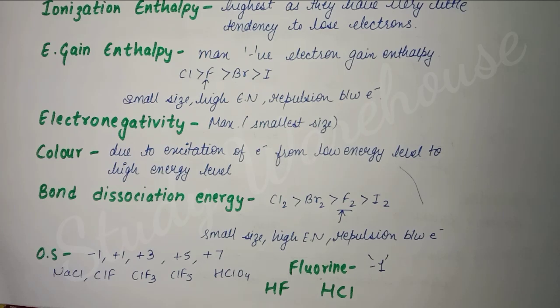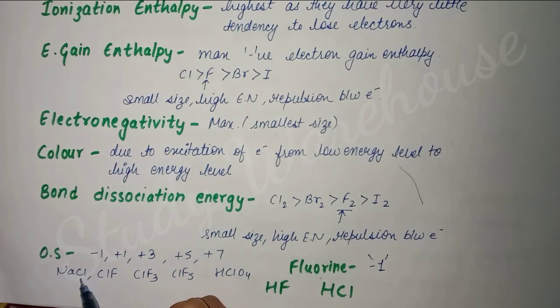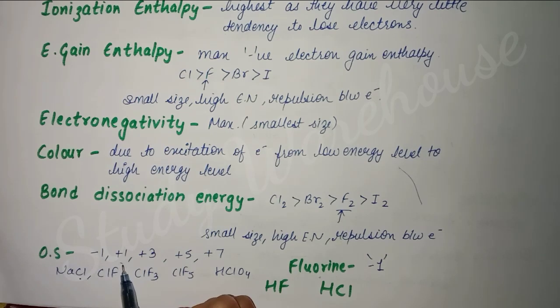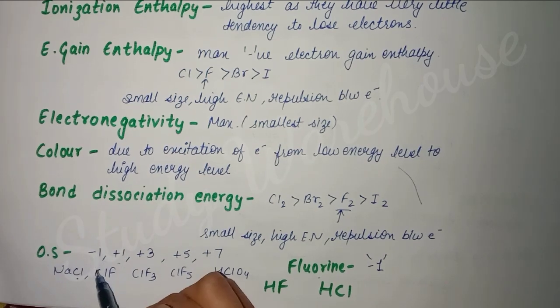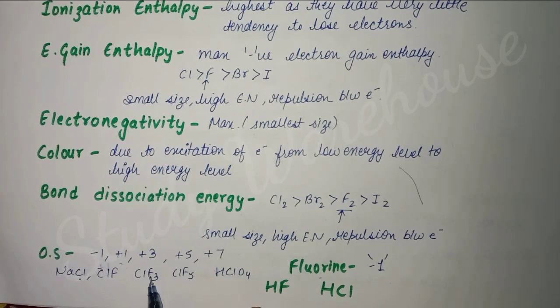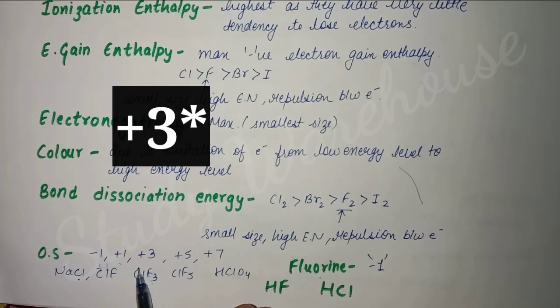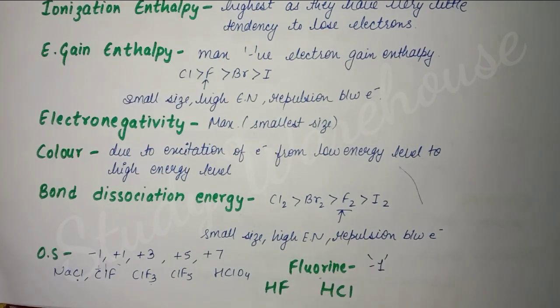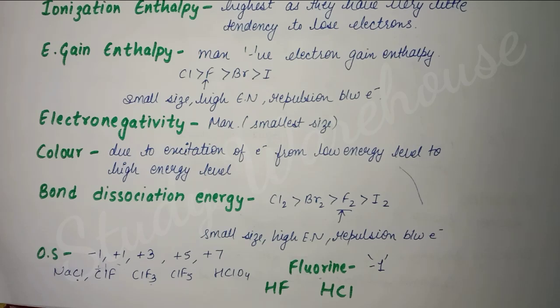For oxidation states like -1, in NaCl, chlorine's oxidation state is -1. But when chlorine is bonded with fluorine, fluorine will always be -1 and never change, so chlorine becomes +1. Similarly, in ClF3, fluorine is -1 and chlorine is +3. In HClO4, chlorine is +7. You just need to understand when it will be +3, +5, or +7 in different oxidation states.